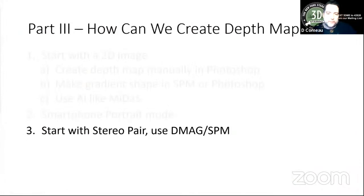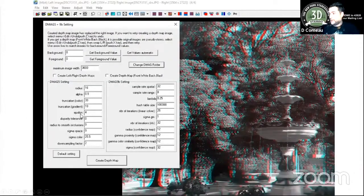And finally, we can create a depth map from a stereo pair. And this is really my preferred method of creating the depth maps, if I can, if I have a stereo pair. So here I say we can use DMAG along with Stereo Photo Maker. So DMAG is created by Ugo Capito, and it's a really great program, which can be run standalone or attached to Stereo Photo Maker for seamless conversion.